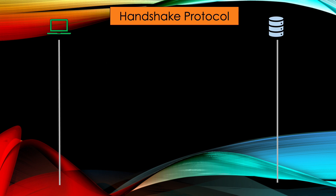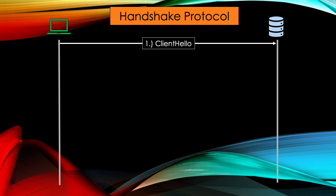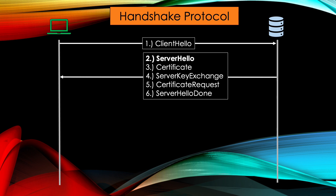If a client wants to connect to a server using, for example, HTTPS, they initialize the session with a message CLIENT HELLO. This message contains a random number, which is used to calculate the pre-master secret, as well as the supported cryptographic functions. The random number is also used to prevent replay attacks. If this connection is part of an already established session, the session ID is also part of the CLIENT HELLO. The server answers with a bunch of its own commands. First, SERVER HELLO indicates that the server supports a cryptographic function which the client has sent as a preference.